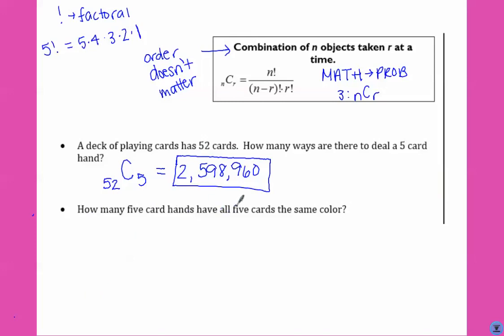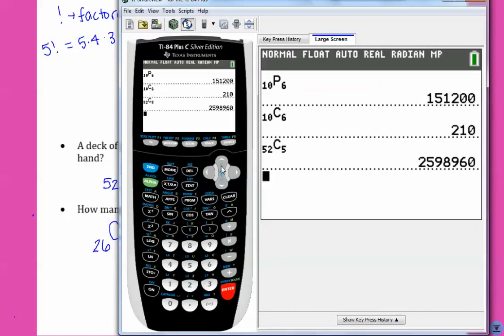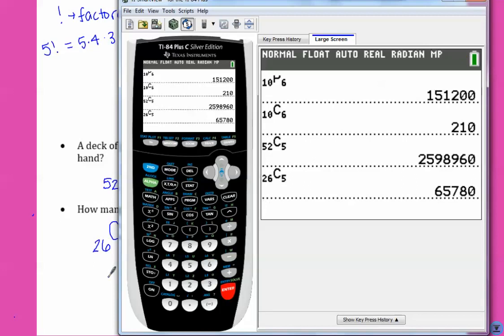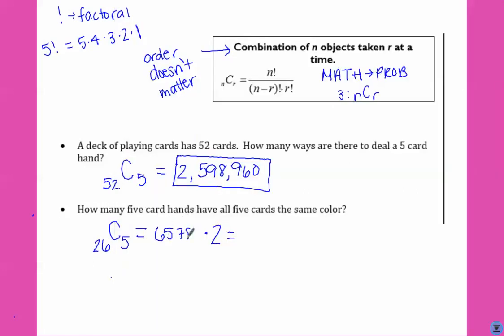So how many five card hands have all five cards the same color? Now, in the deck, half the cards are red and half the cards are black. So now we've narrowed it down to 26 cards that we're choosing from, and we want to choose five that are all the same color. Now the key thing is, there's two colors, so after we get this number, we have to multiply it by two. So there's 65,780 ways times the fact that there's two different colors. So there's 131,360 ways to get a five card hand where all five cards are the same color.